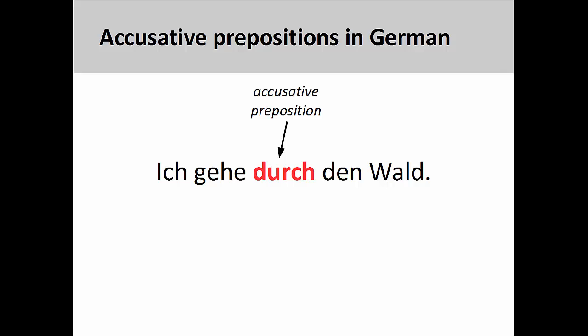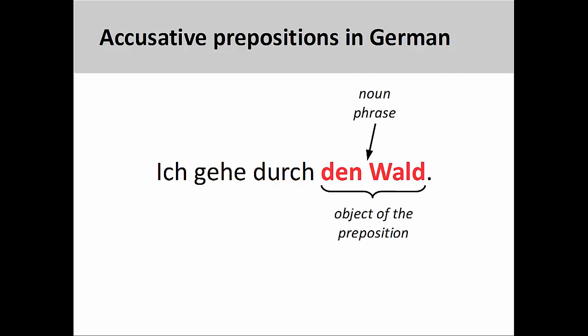Ich gehe durch den Wald — I go through the forest. And like English, the preposition also has an object, which here is again a simple noun phrase.